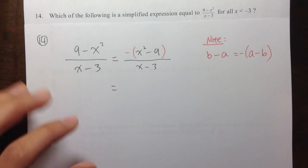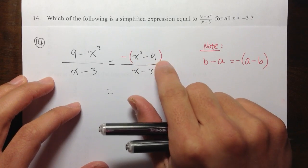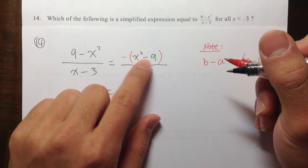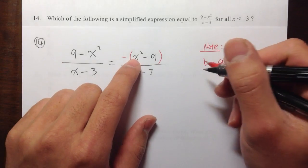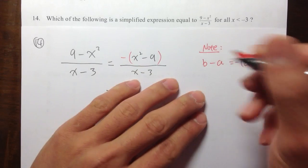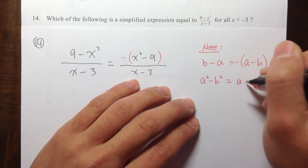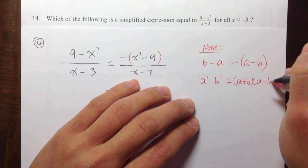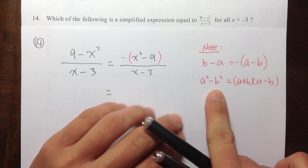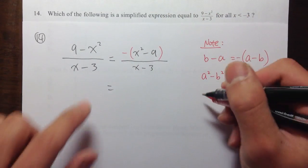The second step, this question is similar to question number 13. We need to see how to factor out the top. The bottom, there's nothing much we can do. To factor out x squared minus 9, two term factorings, this is actually a difference of two squares. If you have a squared minus b squared, I can write this as a plus b times a minus b.